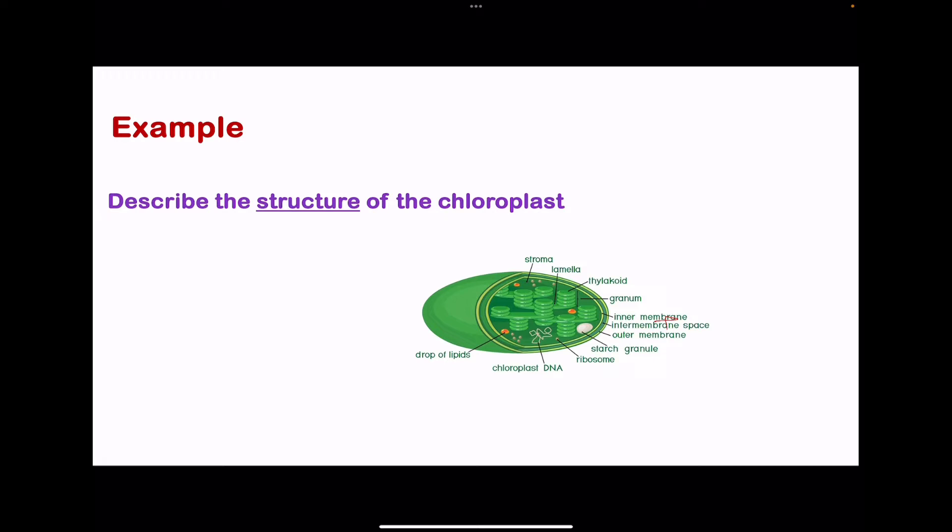If we look at this structure, the chloroplast contains an inner membrane, an outer membrane, thylakoid, stroma, and so on.